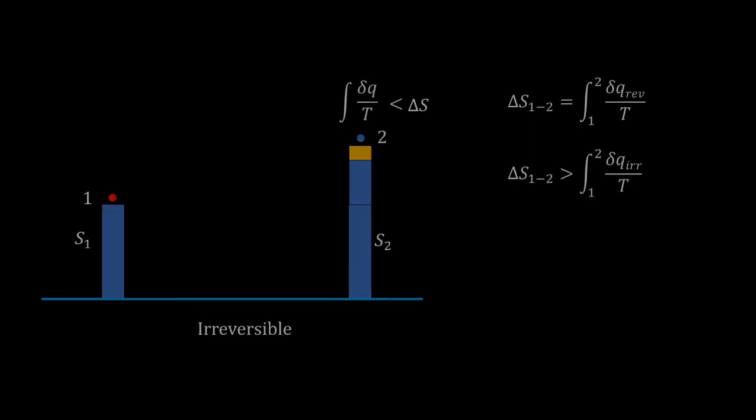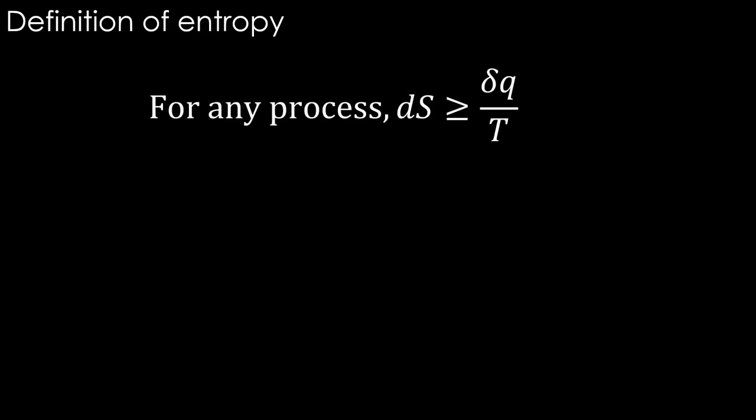With this clarity on Clausius inequality, we are finally ready to see the formal definition of entropy. Entropy is a state property, the change in which is equal to or greater than δq divided by T for any process. That's the formal definition of entropy.